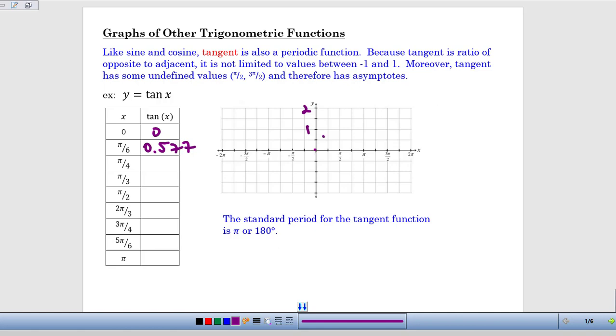When we get to π/4, the coordinate is √2/2, √2/2 on the unit circle. So that means our ratio is one, so we're up to one.